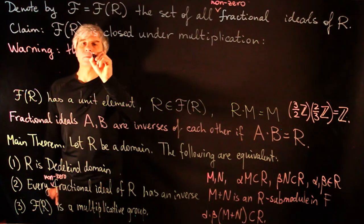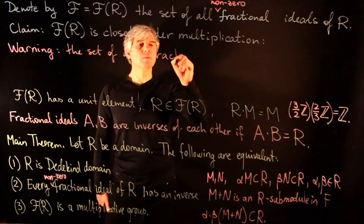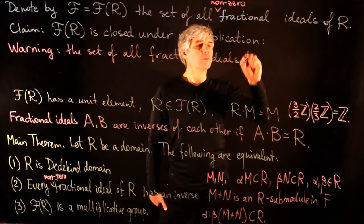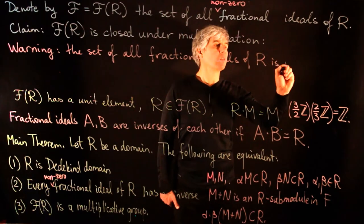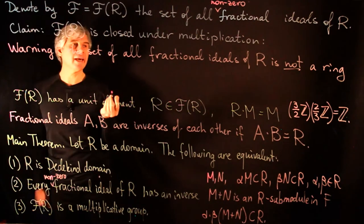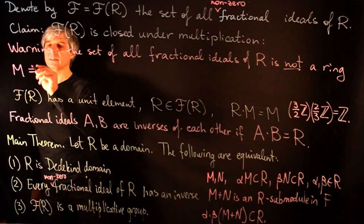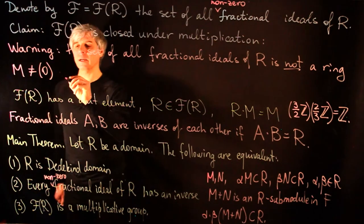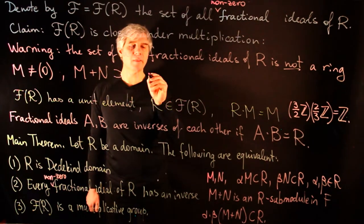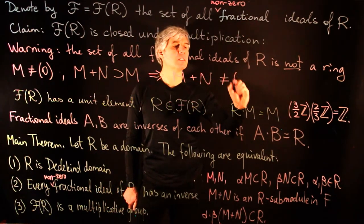Let us give the following warning: the set of all fractional ideals of R is not a ring. The reason is that we do not have additive inverses. If M is a nonzero fractional ideal, then M + N will always contain M, so M + N cannot be the zero ideal.